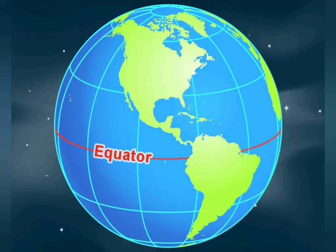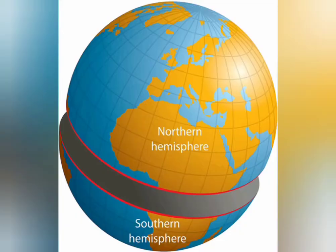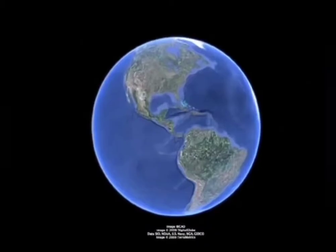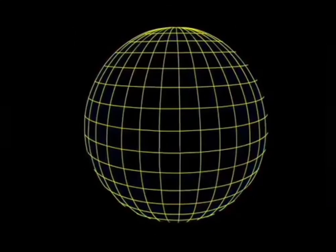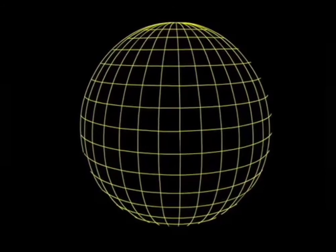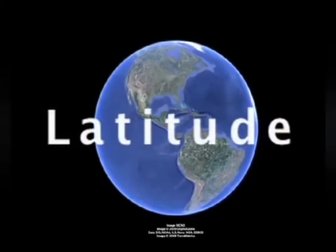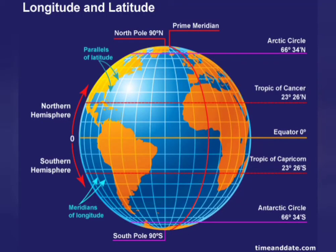The equator is a circle passing through the center of the earth. It is perpendicular to the axis and divides the earth into two hemispheres — the Northern Hemisphere and the Southern Hemisphere. There are a number of circles parallel to the equator; these circles have their center on the axis and are known as the parallels of latitudes. We can identify these parallel lines using degrees; on the equator, the latitude is zero degrees.